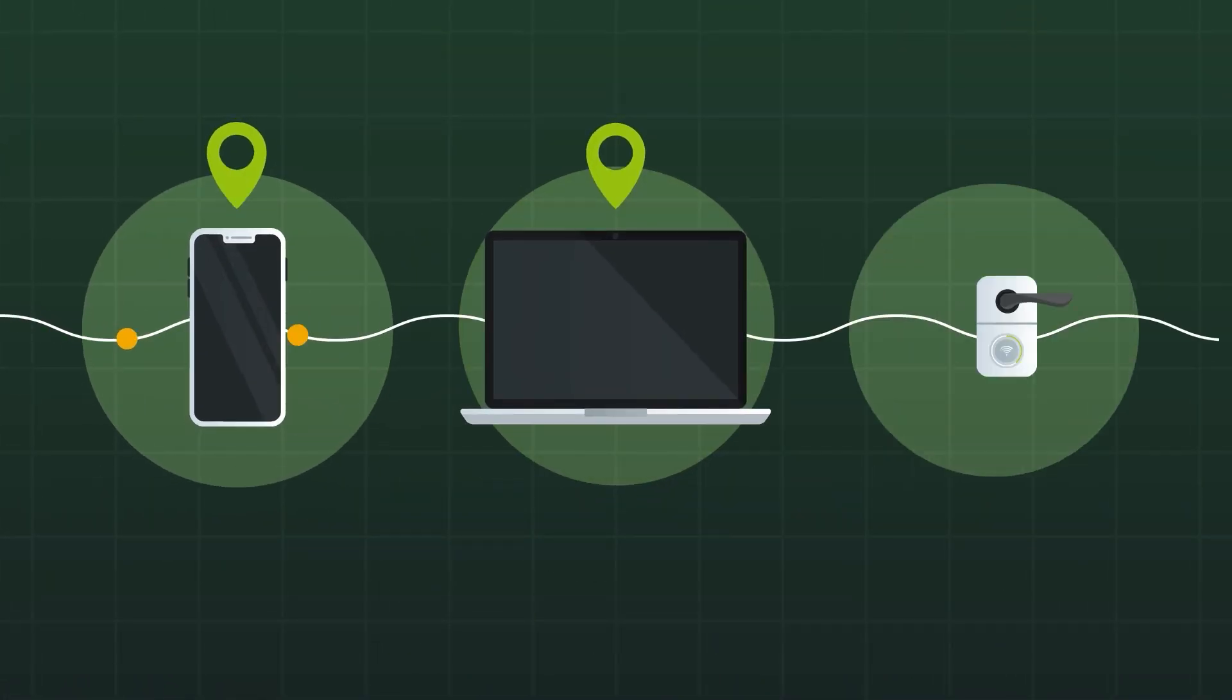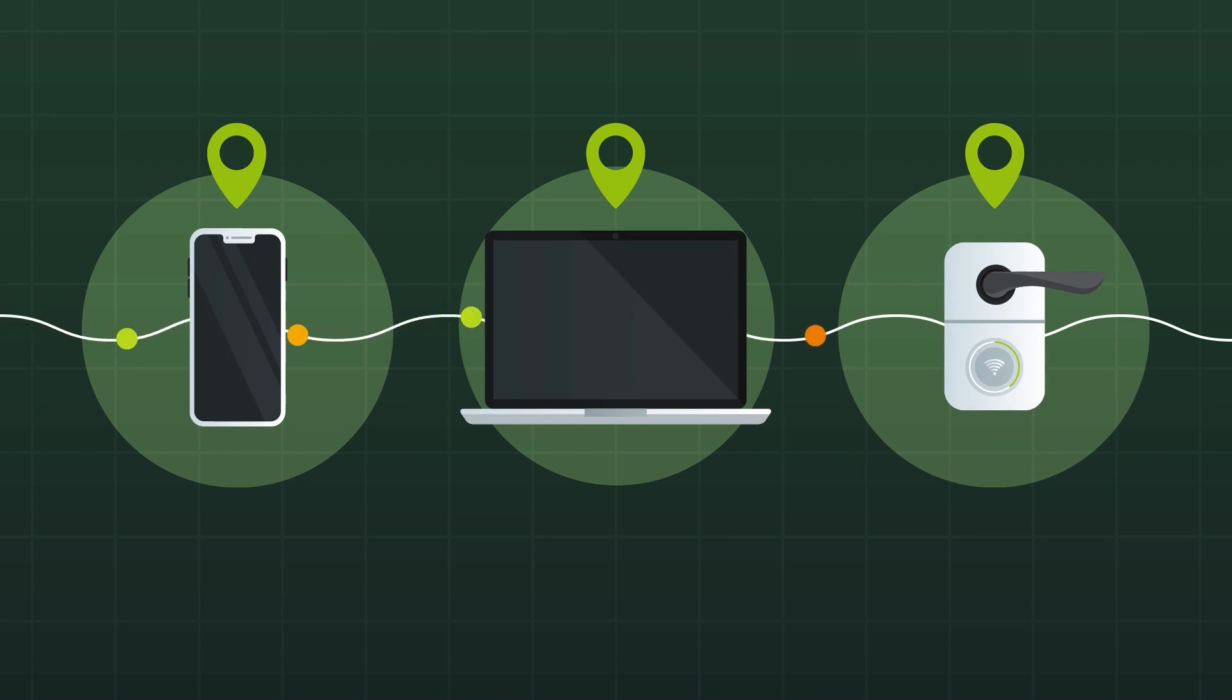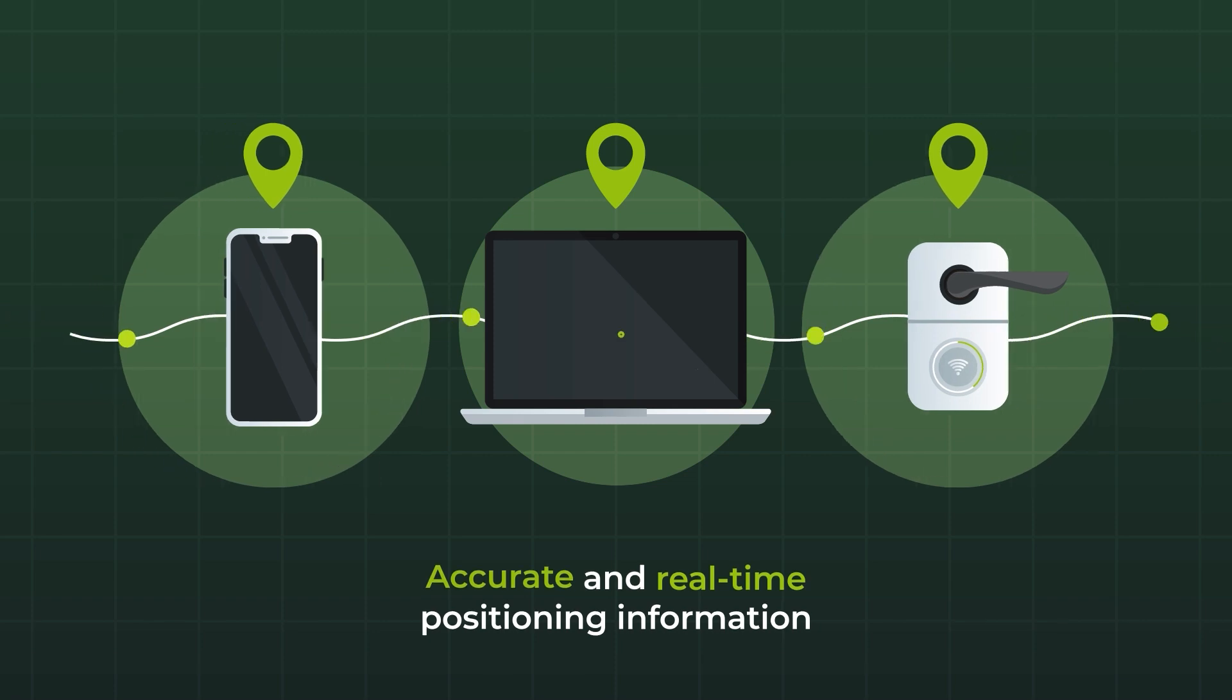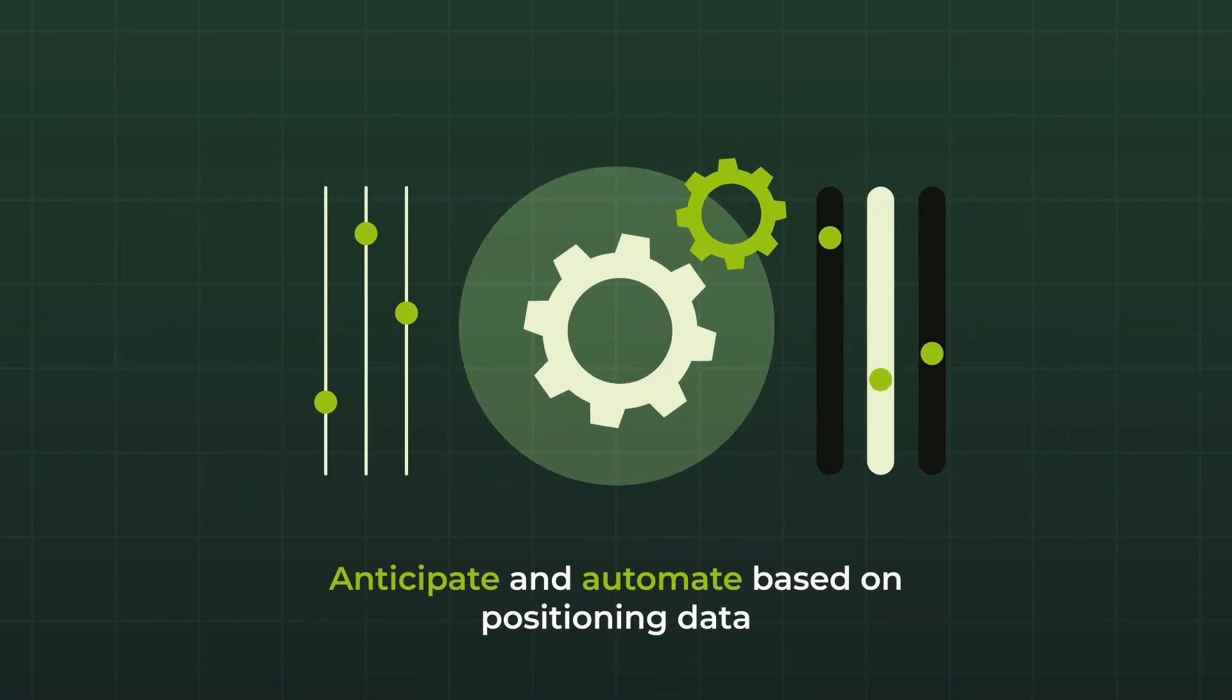Ultra Wideband enables smartphones and other smart devices to obtain accurate, real-time positioning information that can be used to anticipate your needs and automate actions.